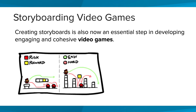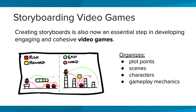Creating storyboards is also now an essential step in developing engaging and cohesive video games. And it makes sense. It's an easy way to organize plot points, scenes, characters, gameplay mechanisms, possible paths, and action sequences. You can see in this simple example how the two cards outline the possible paths for Mario to take, using color to outline the difficulty and possibilities for rewards.